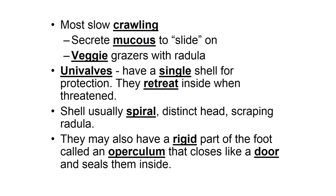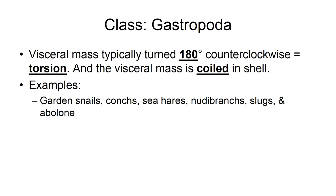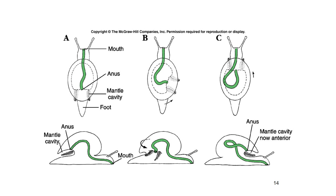Snails have an operculum. If you were to pick one up and touch where their shell is open, it feels kind of hard — that's their operculum that keeps them moist inside their shell. Their visceral mass is typically turned 180 degrees clockwise, called torsion within their shell, and that's how it gets coiled up inside. The final diagram, letter C, shows generally what their structure looks like after it's turned 180 degrees.